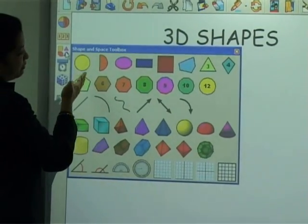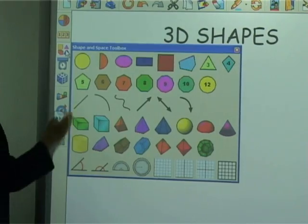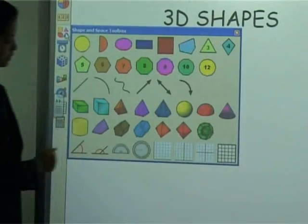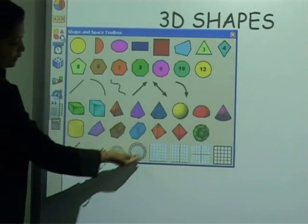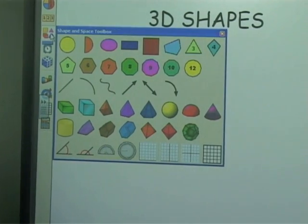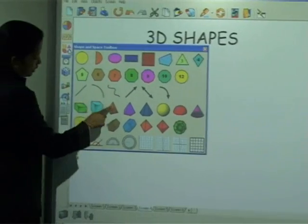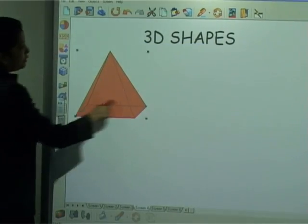In here you can find 2D diagrams and here you can find 3D diagrams, and we have angles and protractors and coordinates. Let's say I'll bring out the 3D shapes.